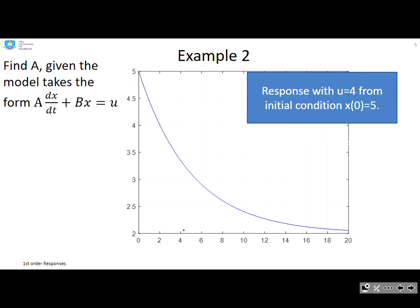Example two. Find capital A given the model takes the form A dx/dt plus bx equals u. Students get confused with this because it's not in time constant form.